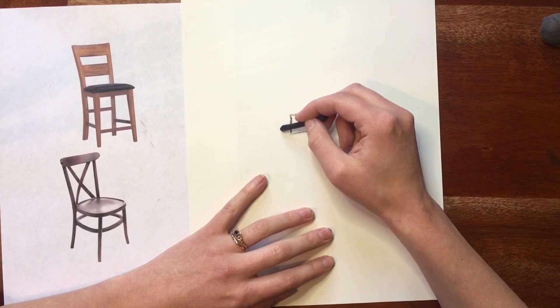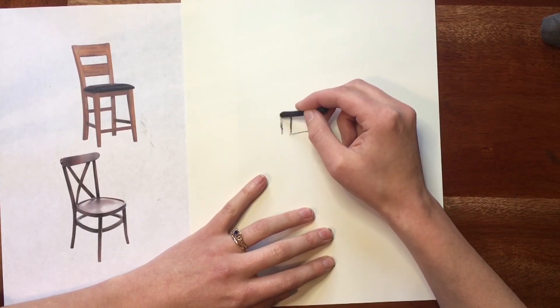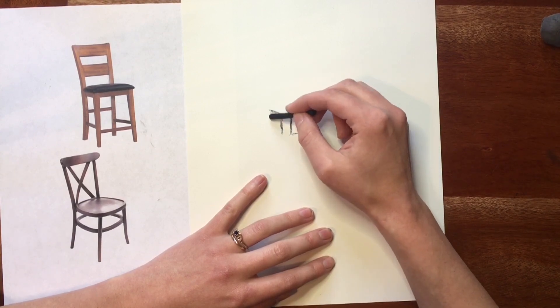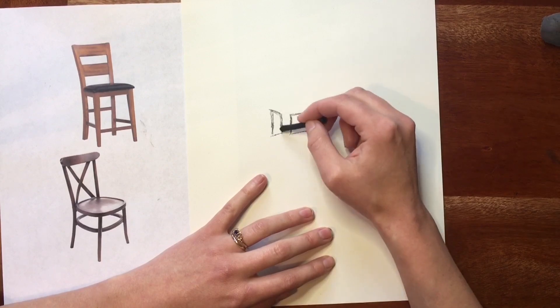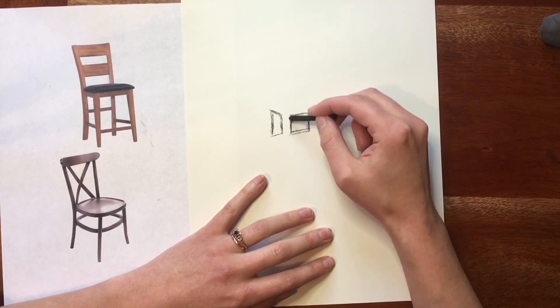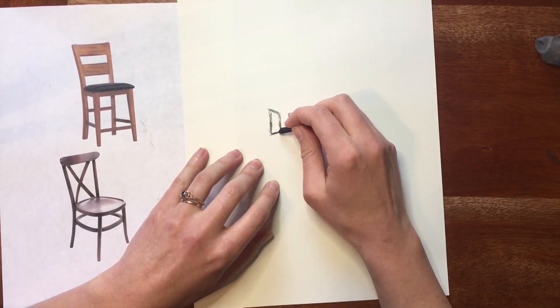Again, we're not thinking about the chair. I am not drawing a chair, I cannot stress that enough. This is a very abstract exercise, and it may take a little bit of practice, and that's okay. That's what these exercises are meant to do, they're meant to be about practice.